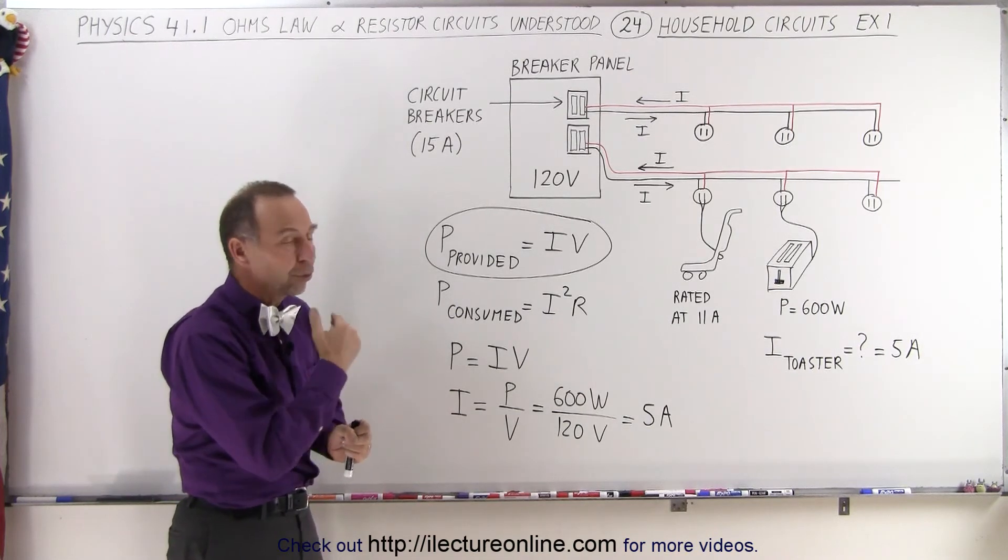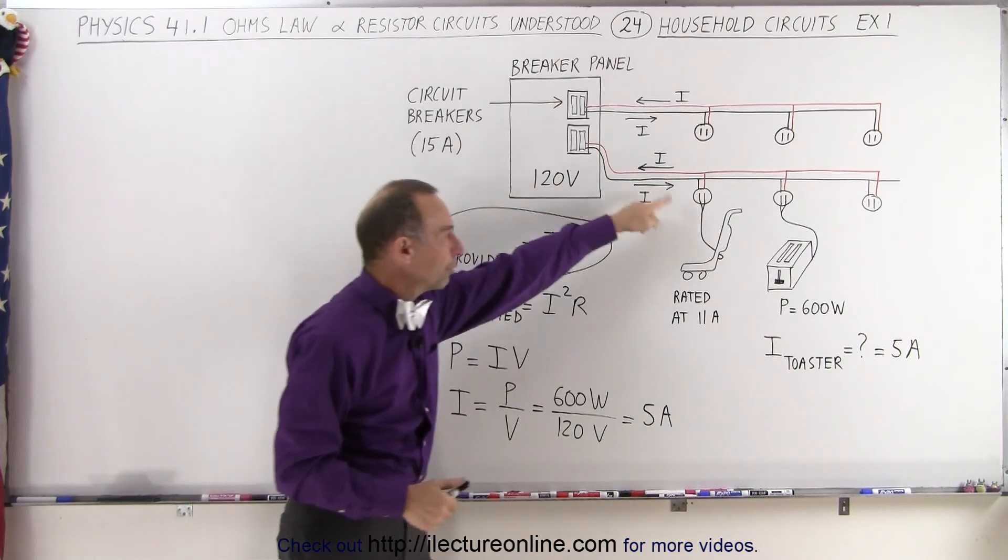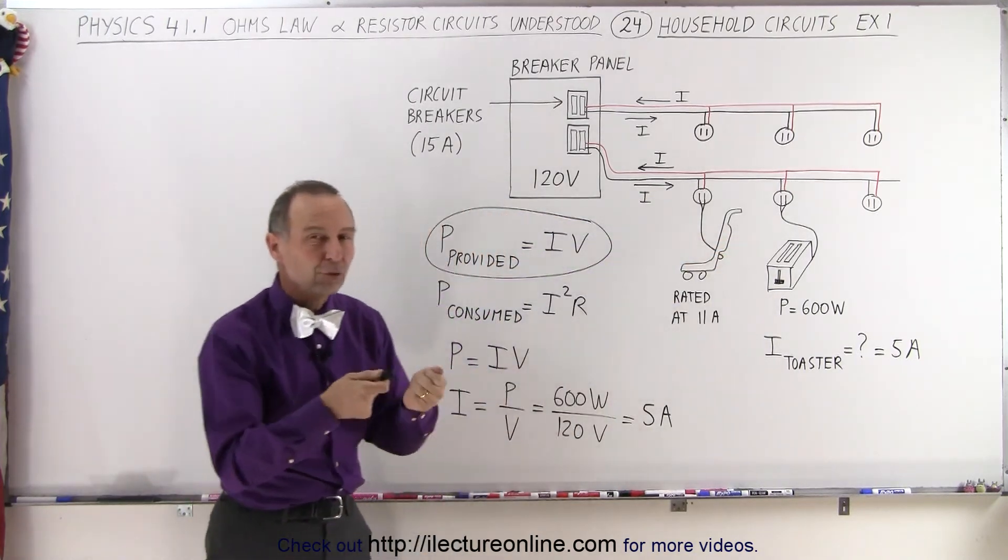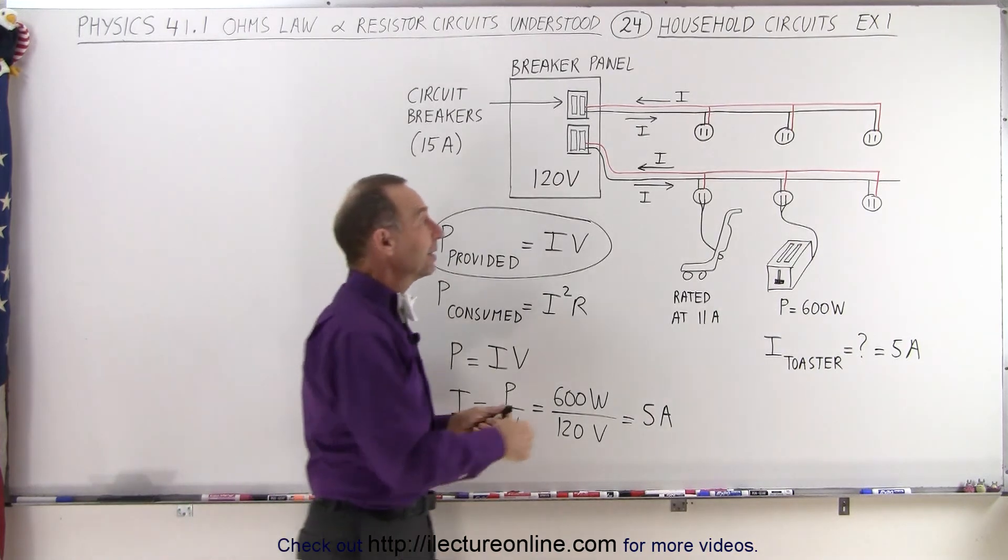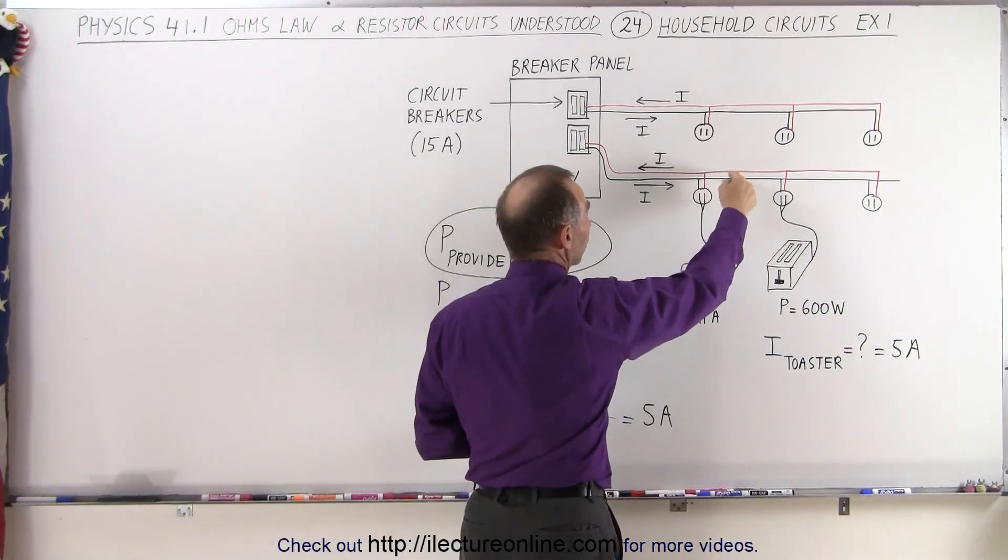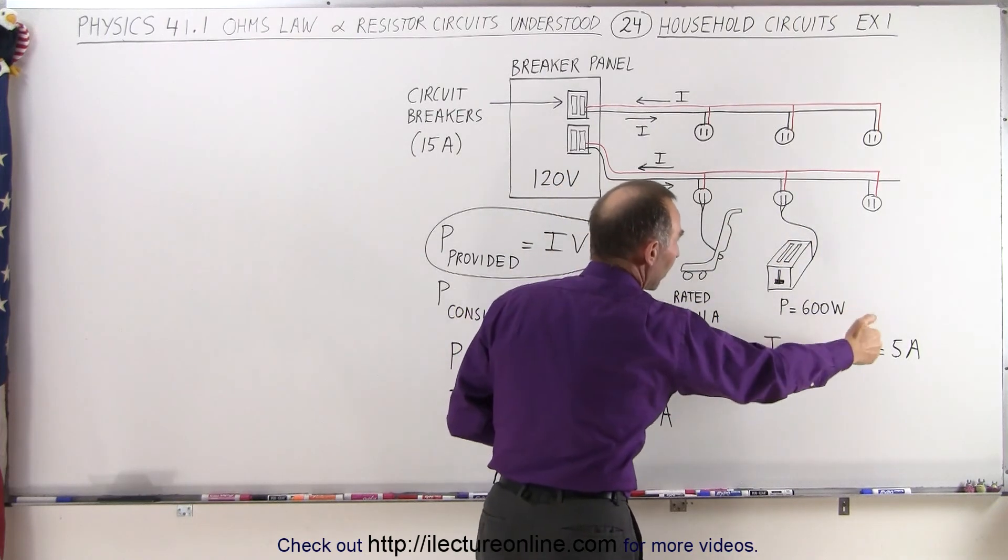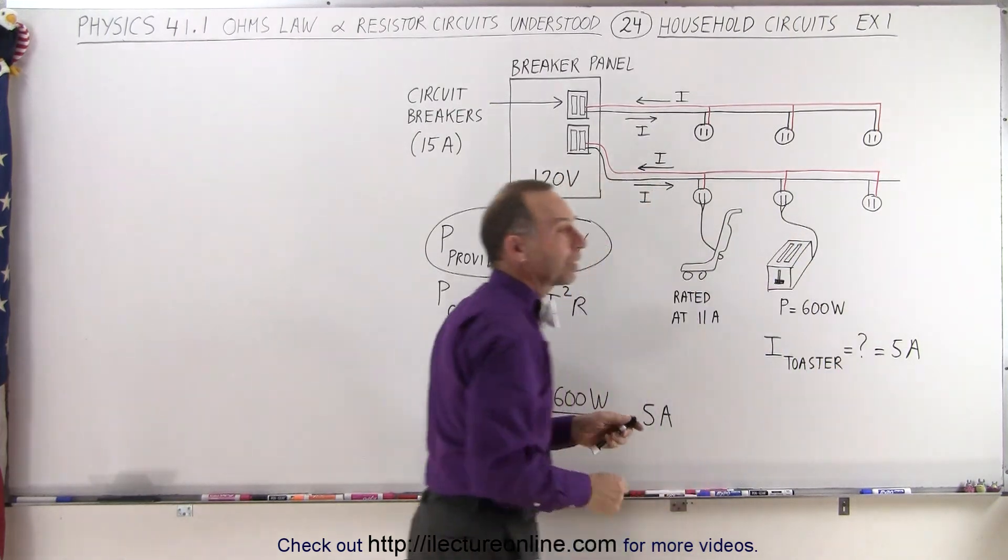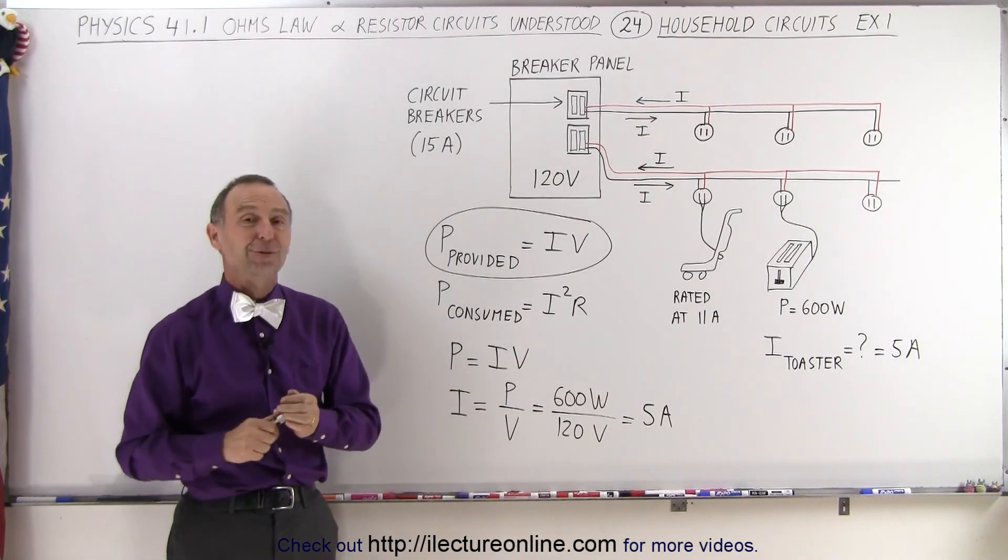And so that's how basic household circuits work. They have circuit breakers that protect us against an overload that can happen when you plug in too many appliances that draw too much current. Simply said, the current drawn in each circuit, or the current required to operate in each circuit, is simply the sum of all the devices that you plug into the circuit. And that's the basics of household circuits.